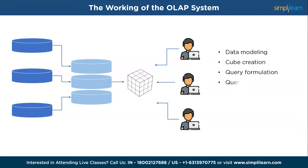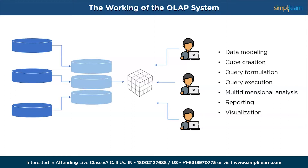The main steps involved in the typical OLAP process are: data modeling, cube creation, query formulation, query execution, multidimensional analysis, and reporting and visualization. The OLAP process enables users to analyze data interactively, perform complex calculations, and gain insights by exploring data from multiple dimensions. It facilitates flexible and ad-hoc reporting, empowering users to make informed decisions based on comprehensive data analysis.